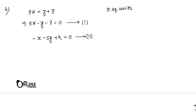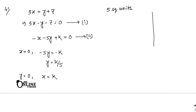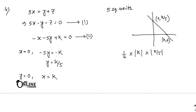Putting x = 0 in equation 2: y = k/5. Putting y = 0 in equation 2: x = k. So the intercepts are (k, 0) and (0, k/5). The area of the triangle is (1/2)|k| · |k/5| = k²/10. According to the problem, k²/10 = 5, so k² = 50.